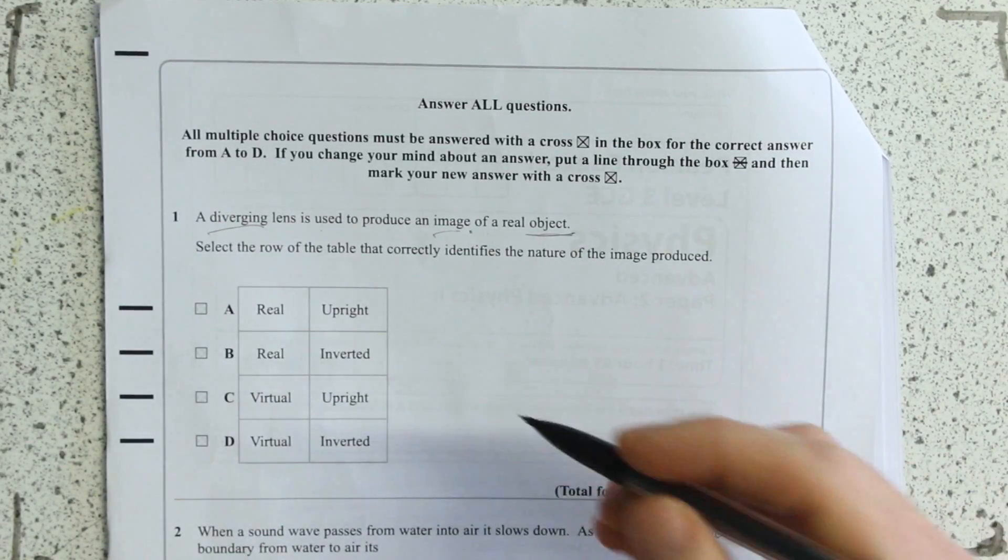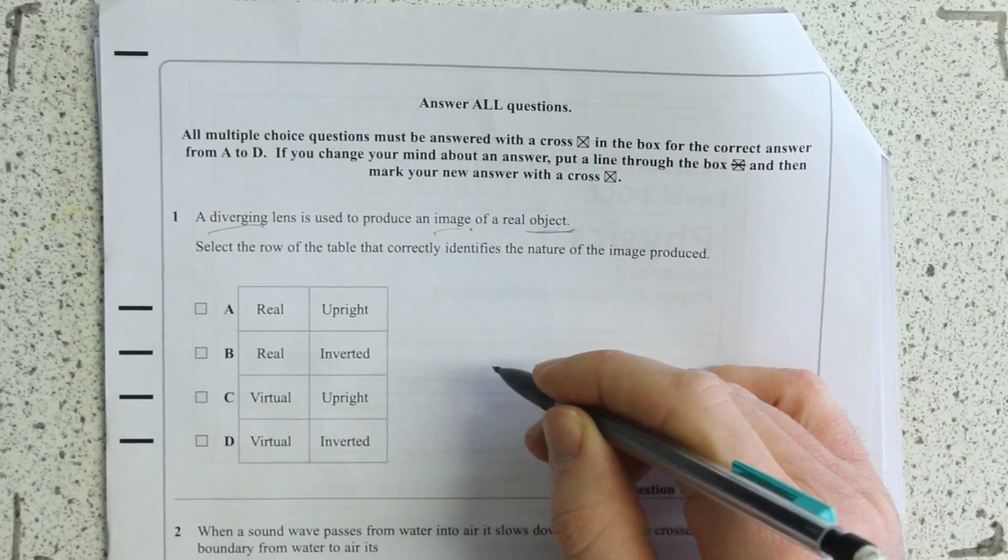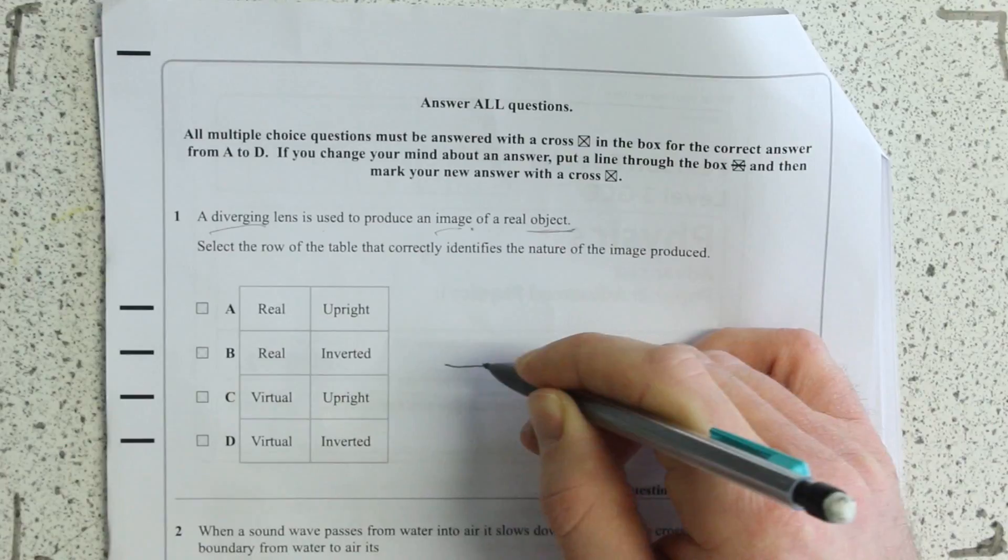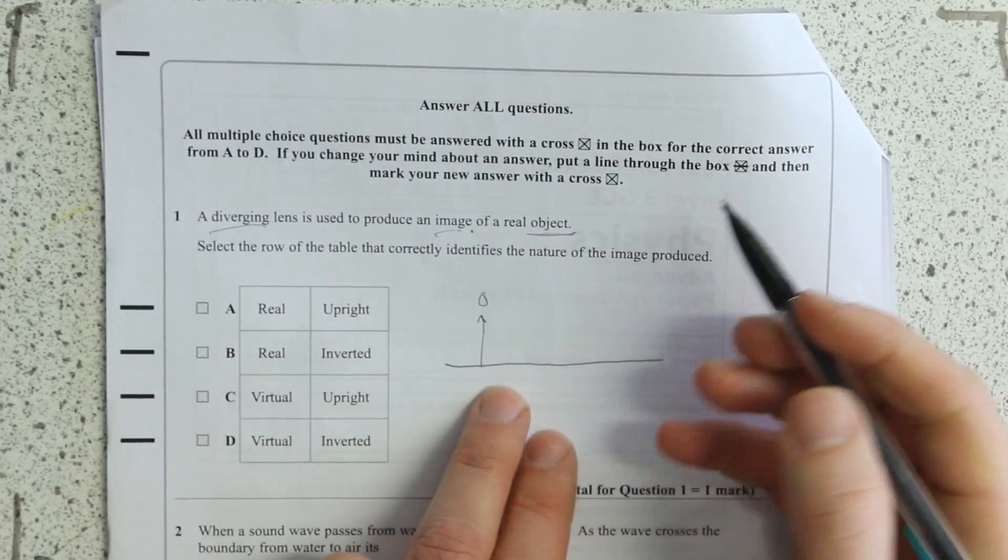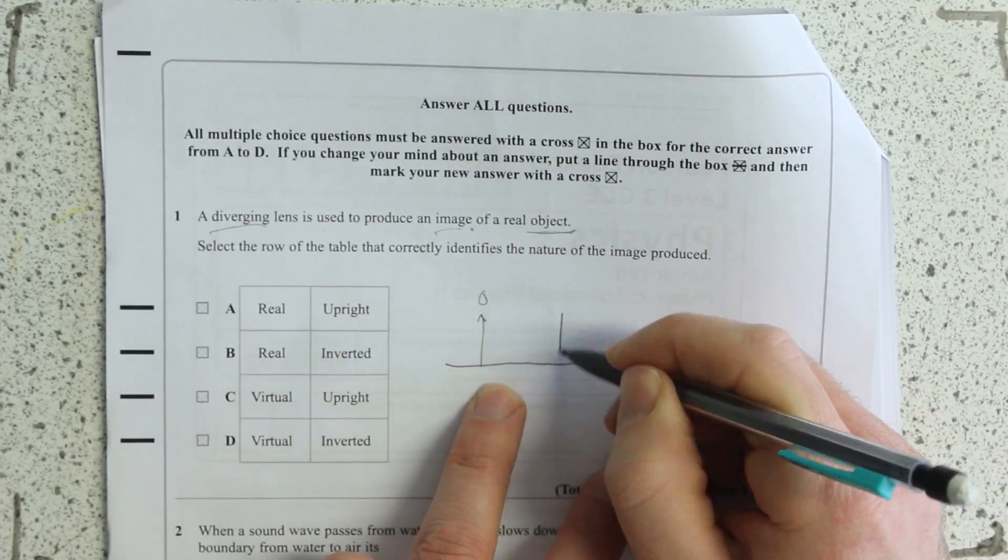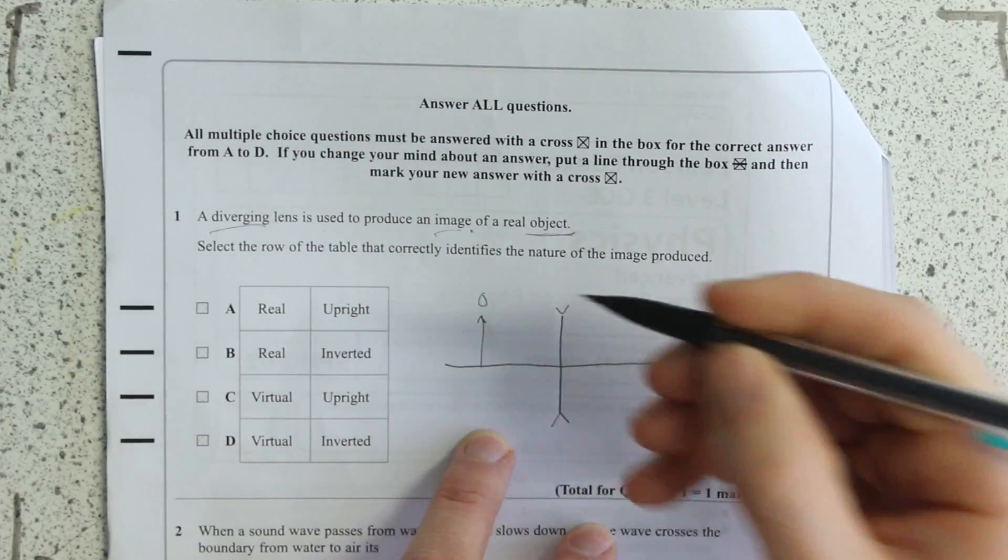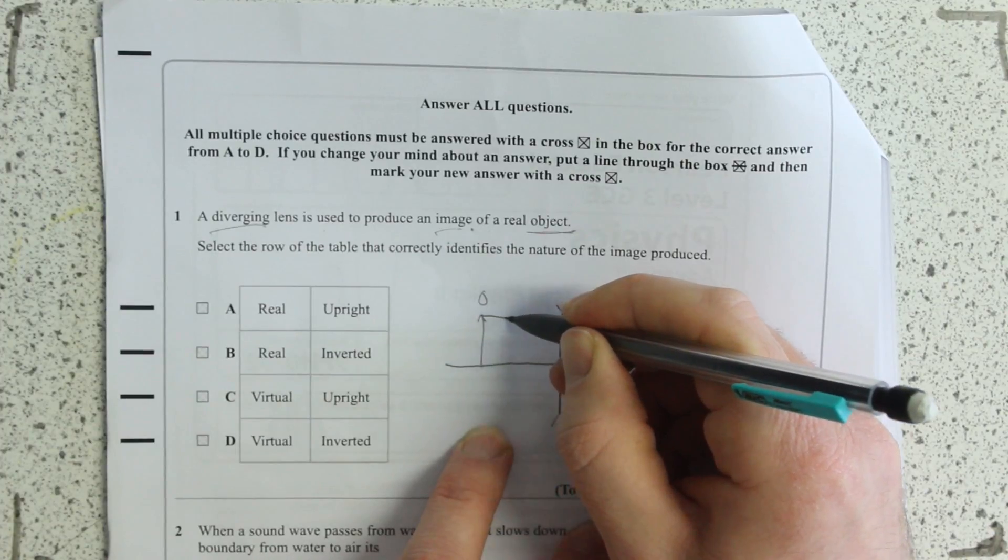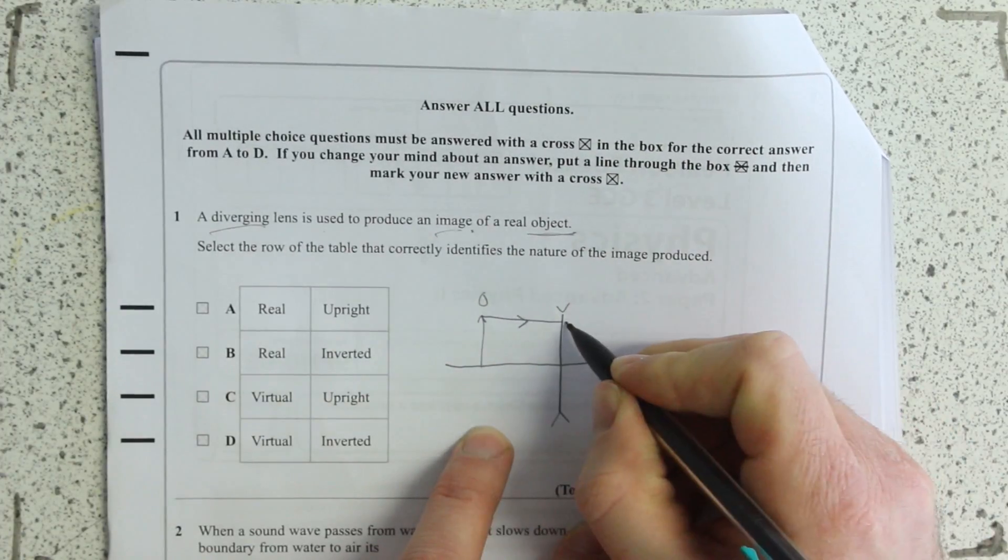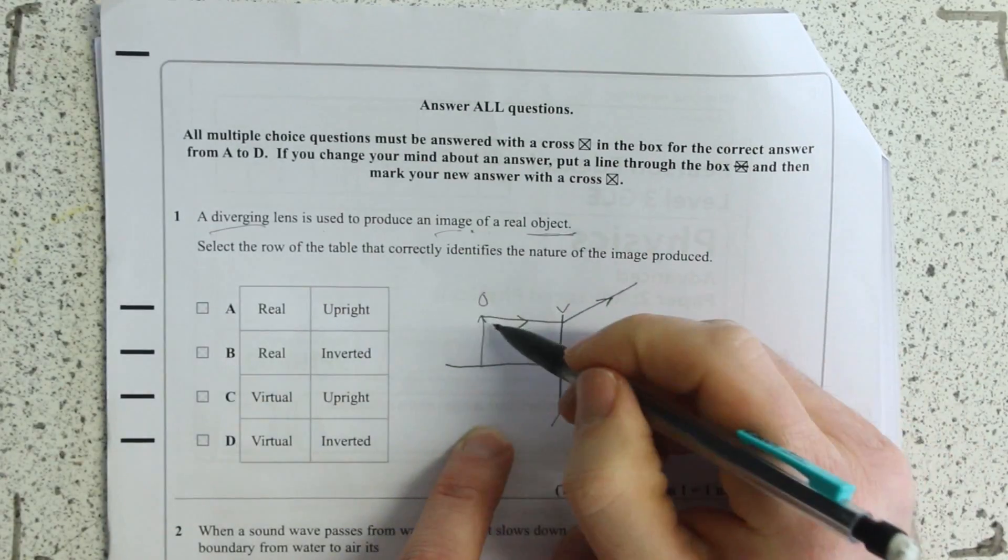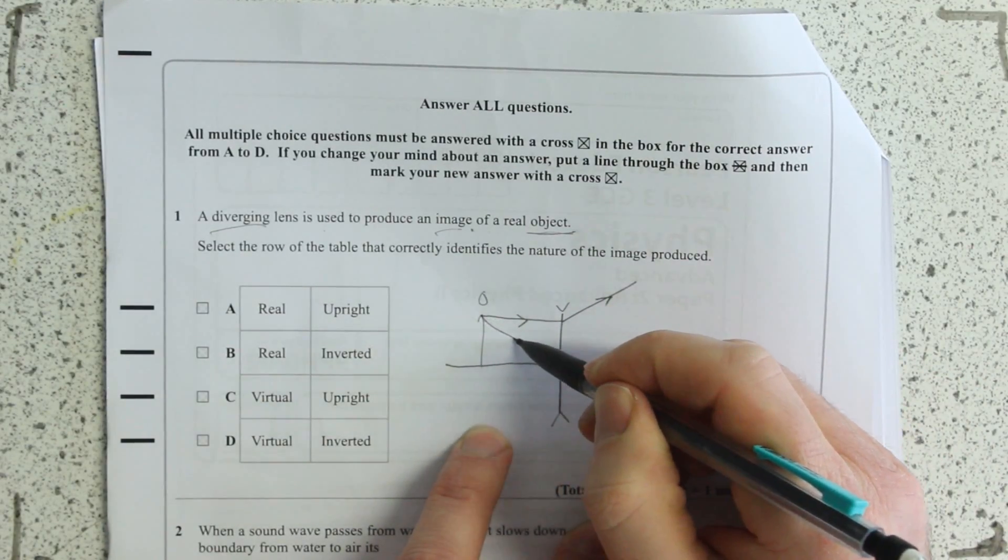If this was the axis of the lens, this is the object here, lens in the middle, and you're told it's a diverging lens which has this symbol. What's going to happen to this ray as it meets the lens? It's going to move away from that, and the ray from the top goes straight through the center of the lens.